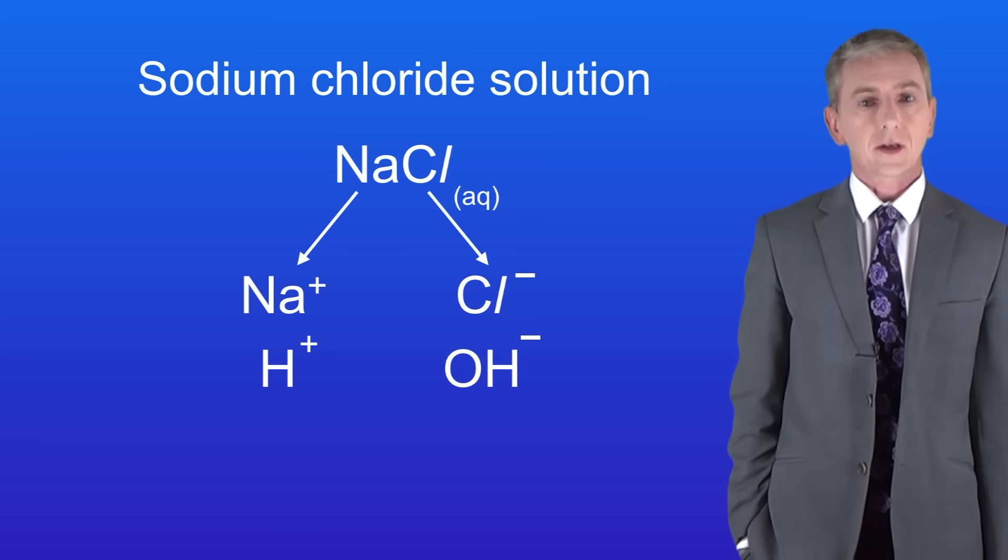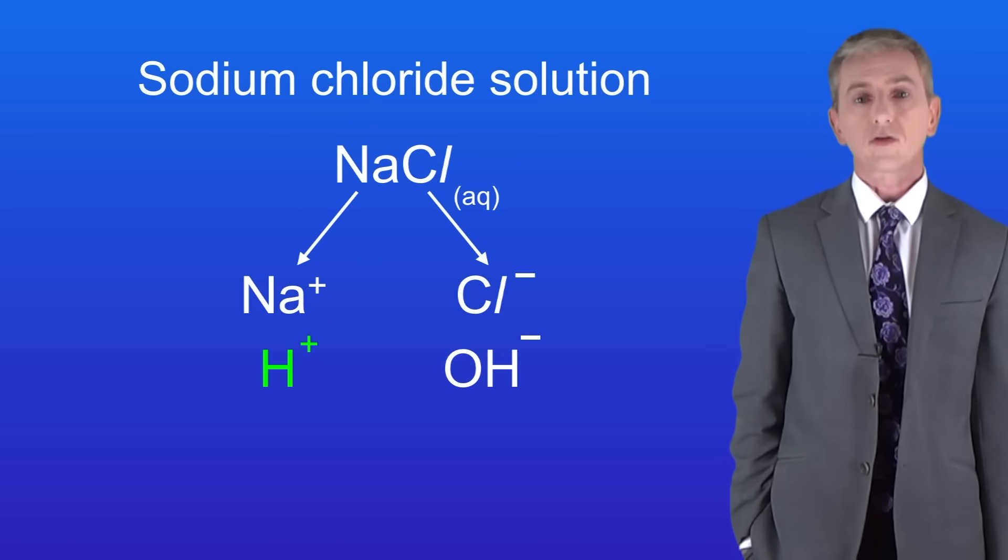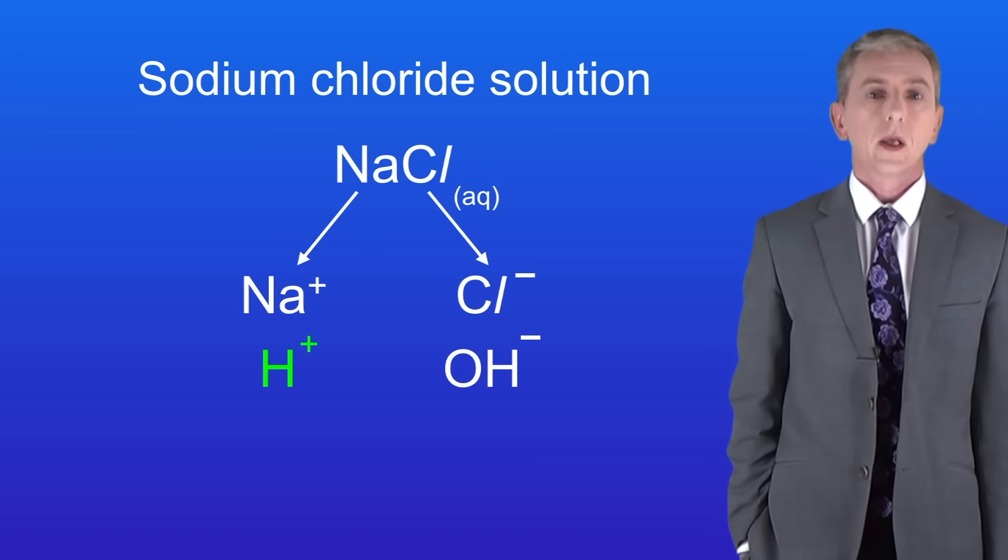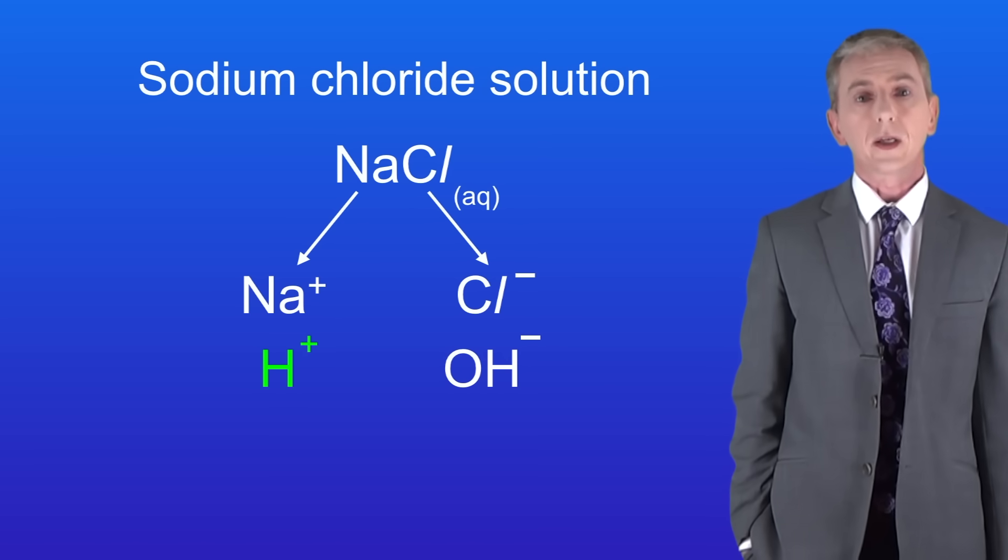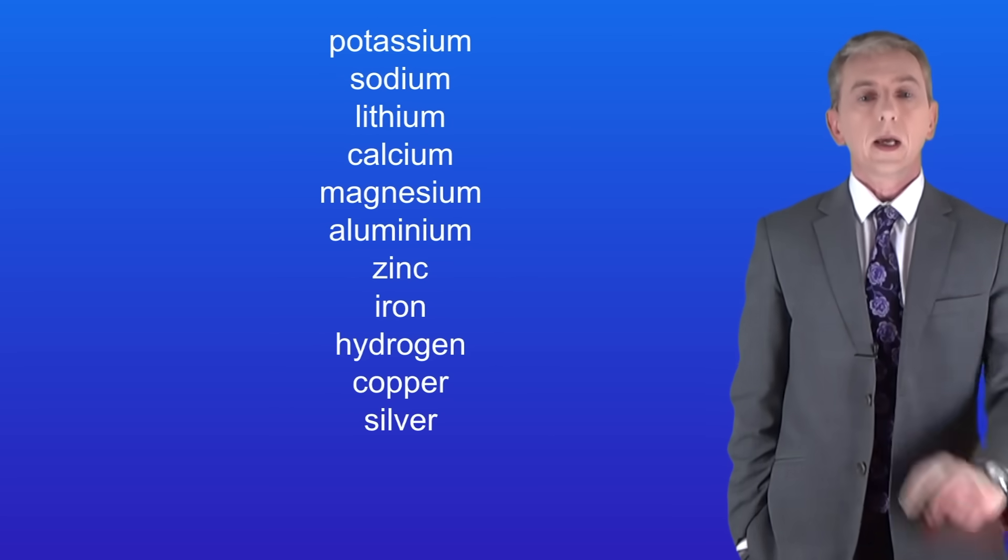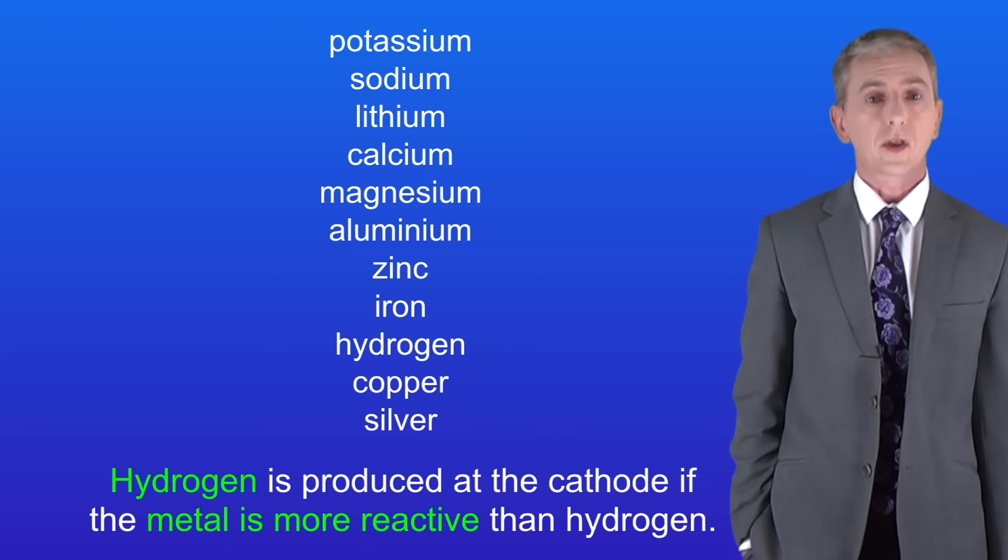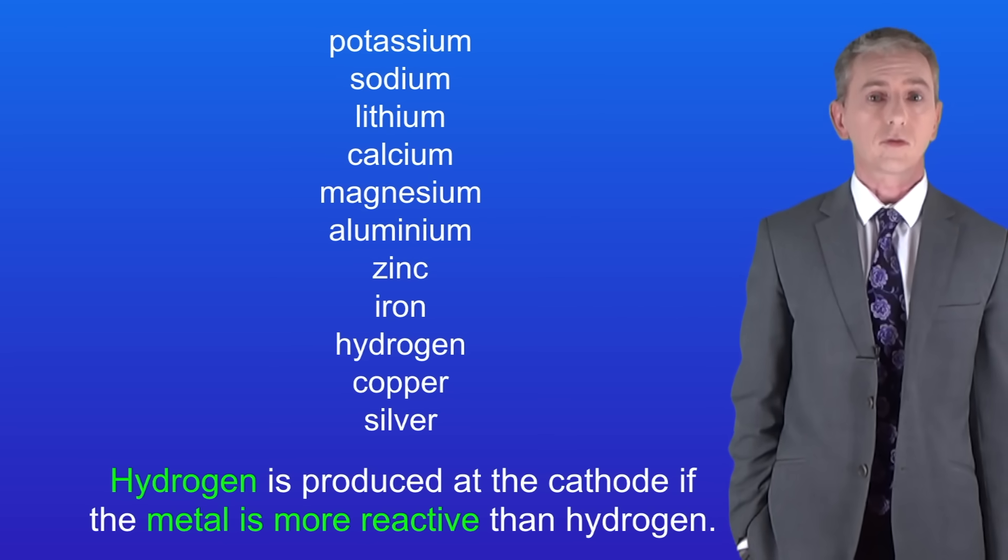We're going to start by looking at the reaction taking place at the cathode which is the negative electrode. Two ions will be attracted to the cathode: the sodium ion Na+ and the hydrogen ion H+. To work out which ion will react we need to go to the reactivity series. As we said in the last video, hydrogen is produced at the cathode if the metal is more reactive than hydrogen.